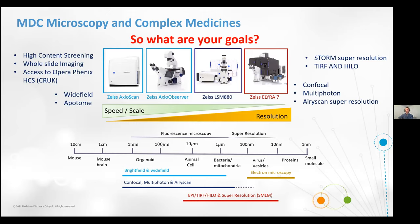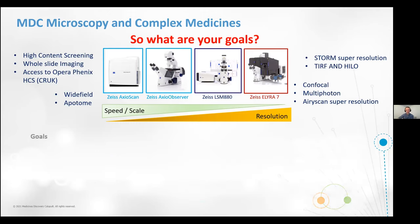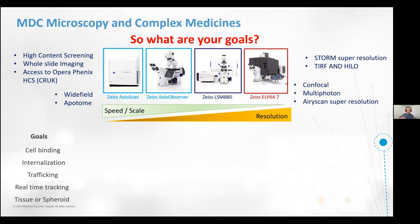The first thing we want to know is what are your goals. You can be looking at cell binding, internalization, trafficking, real-time tracking, or looking at tissue and spheroids — and each one has its own method of analysis. From that, you decide what equipment to use depending on its capabilities. For cell binding, you can do a broad-stroke hit-and-miss assay asking whether your particle is interacting with this cell, in which case you might do a plate or slide scanner. Or you could be interested in how it's binding at the receptor level — a co-localization assay — in which case you need something with higher resolution.